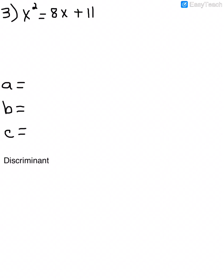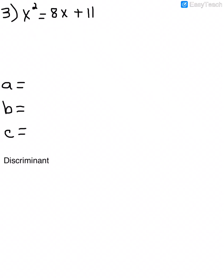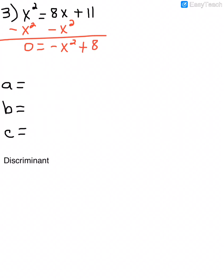Here is another one. It doesn't matter if we move x squared to one side or move 8x and 11 to the other side — either way we get the same answers. To move only one term, we subtract x squared from both sides, giving 0 equals negative x squared plus 8x plus 11. So a is negative 1, b is 8, and c is 11.